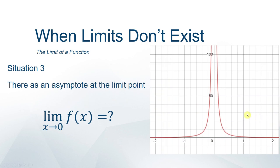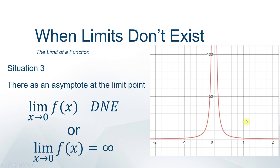A similar situation involves an asymptote, where the left and right-hand limits agree but don't equal a real number. As you head towards 0 on this graph, you go off to positive infinity from both sides. Even though both sides agree in shooting off to infinity, the limit L is supposed to be a real number, so the limit does not exist. Some people write that the limit equals infinity, but that's informal notation — we'll save infinite limits for later.